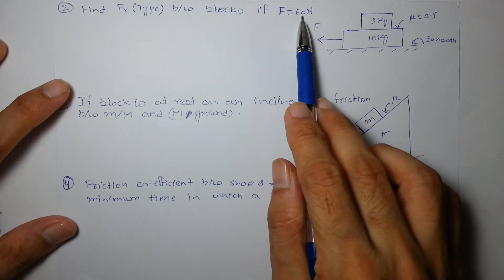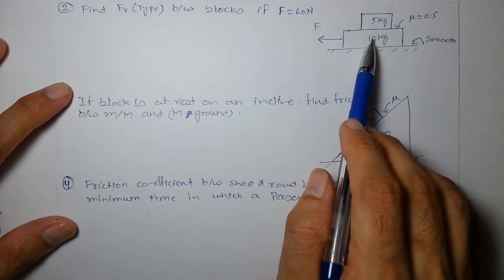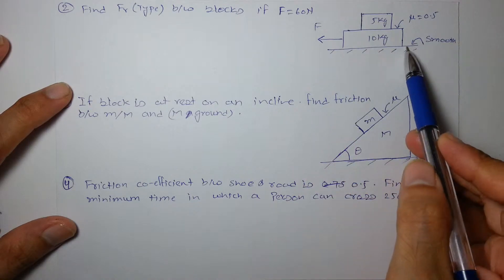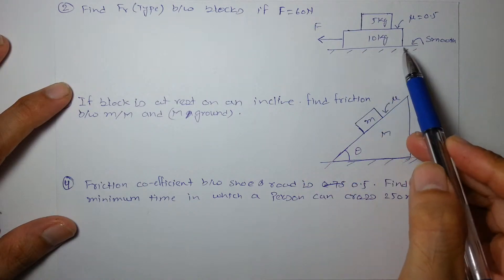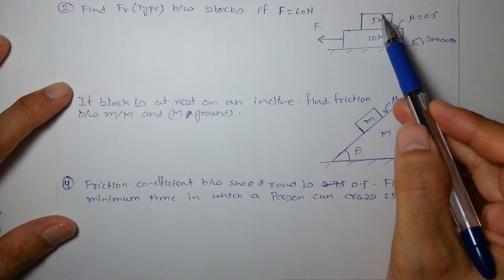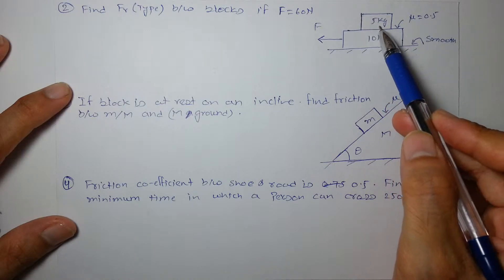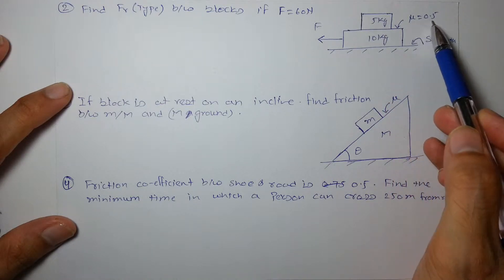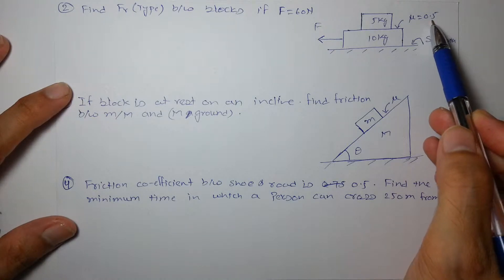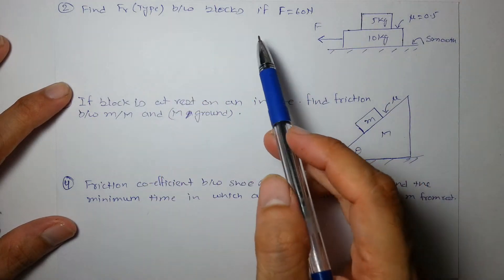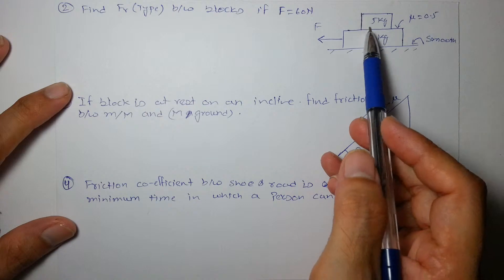The force of 60 N is applied on the lower block which is placed on a smooth horizontal surface and a smaller block of mass 5 kg is placed on it and the coefficient of friction between them is 0.5. We have to find what is the friction force between the blocks.